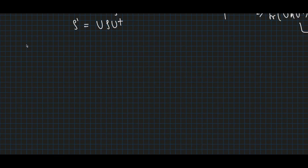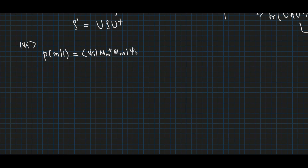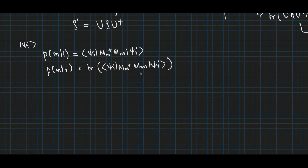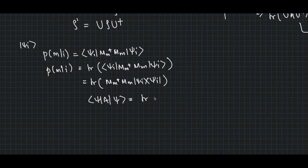Measurements in quantum mechanics can also be described in the density operator language. For an initial state |ψ_i⟩, the probability of getting result m is given as p(m|i) = ⟨ψ_i|M†M|ψ_i⟩, where M is a measurement operator. In terms of trace, we can write this probability as Tr(M†M |ψ_i⟩⟨ψ_i|), using the property that ⟨ψ|A|ψ⟩ = Tr(A |ψ⟩⟨ψ|).